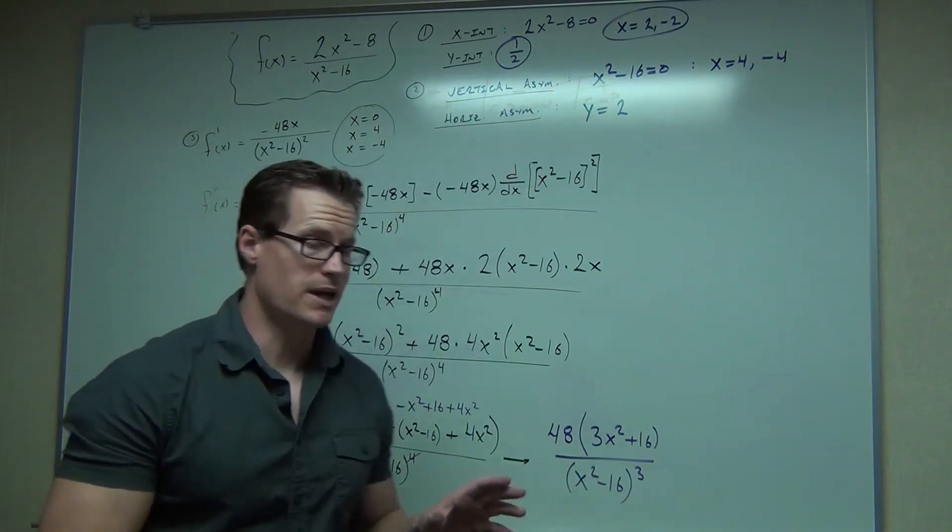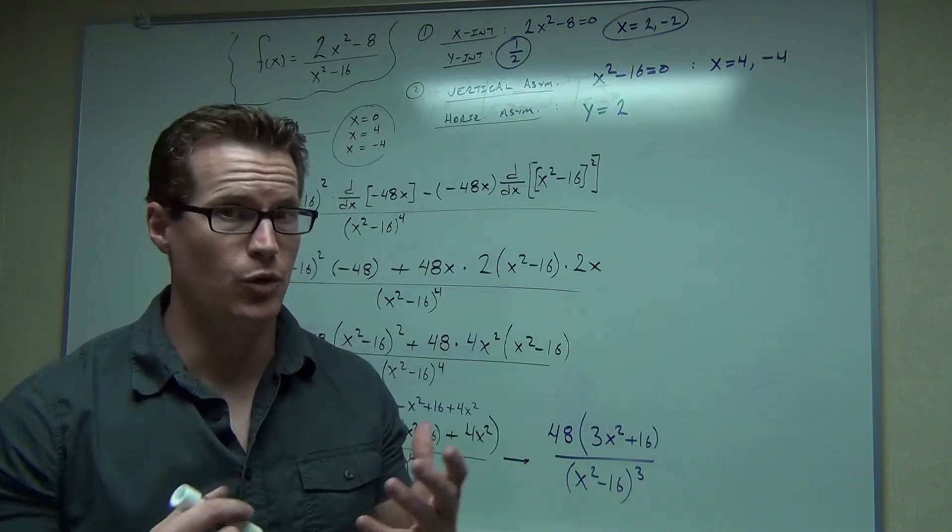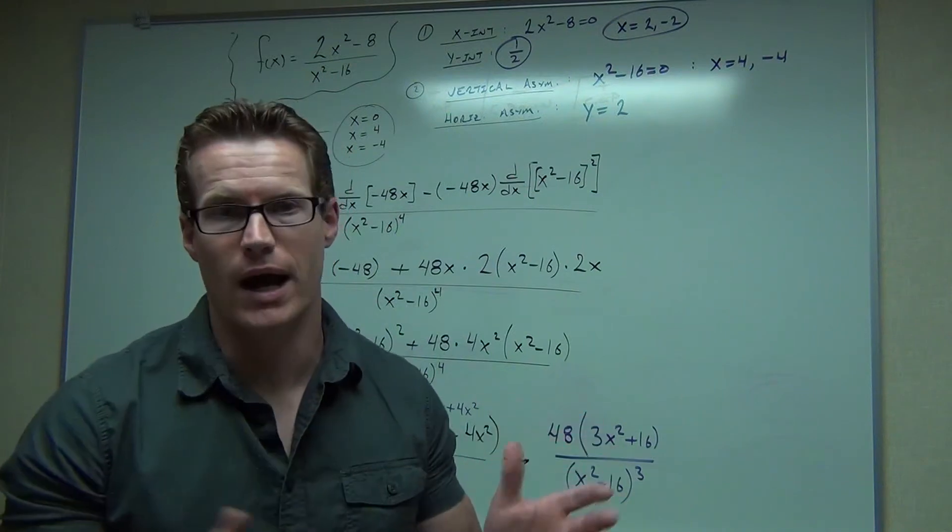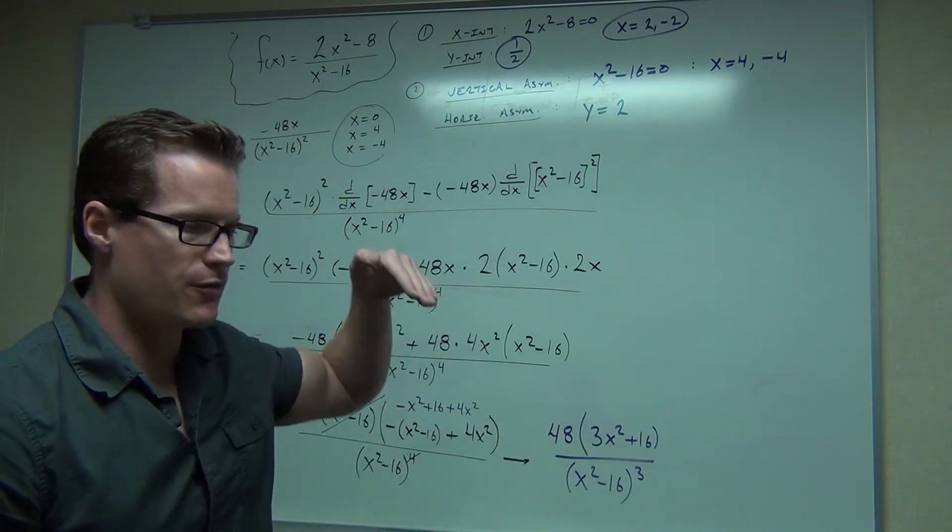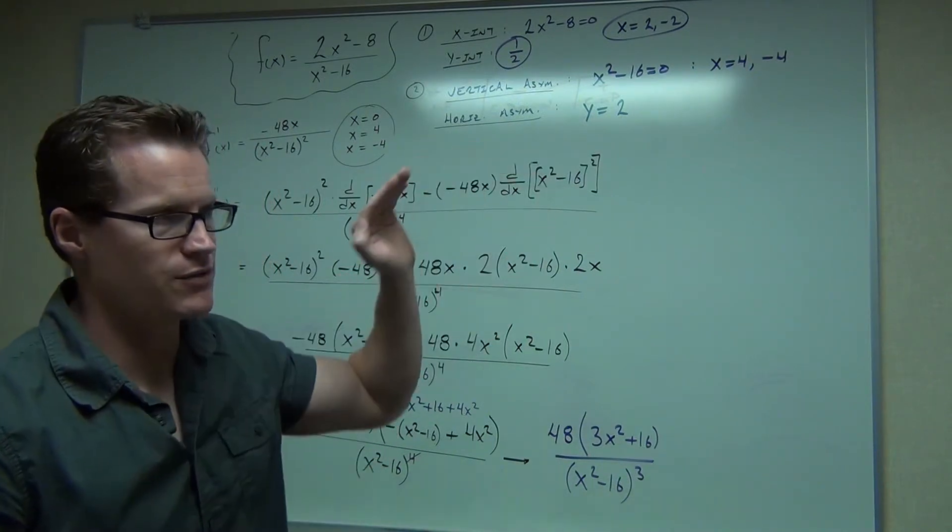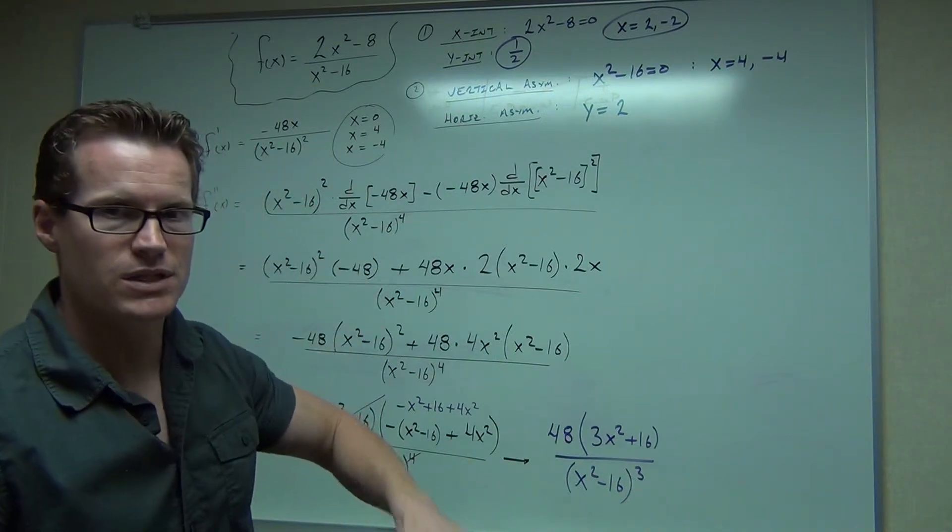Now, what the second derivative is, again, it's concavity. It's how your slope is changing. Or in other words, the curvature of your graph, if you will. So whether it's increasing or decreasing, we can have two different types of that. We can have increasing concave up, increasing concave down. We can have decreasing concave up. We can have decreasing concave down. Just like that.